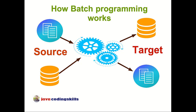But the core idea is simple: we read something and we write something. These two basic things must be there — either we are doing source to target or target to source. We are doing this operation in the same fundamental way, and this is the base programming model of how batch programming works.